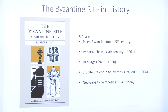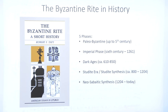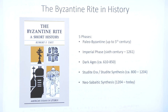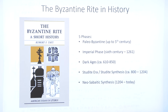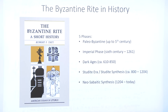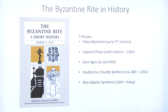So you have the Paleo-Byzantine phase up to the fifth century, the imperial phase from Justinian up to 1261, the so-called Dark Ages from 610 to roughly 850 or so. Then what he called the Studite synthesis from roughly towards the end of Iconoclasm and the coming of St. Theodore of Studite to the Studios Monastery — if I recall, the date 798. And then of course the Neosabbatic synthesis from the fall of Constantinople to the Fourth Crusade till today.